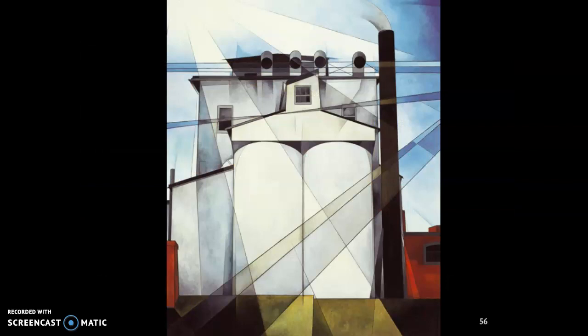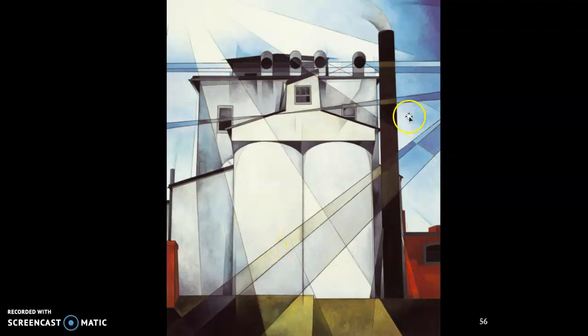Another artist of this period is Charles Demuth, and this work is called My Egypt. It depicts a grain silo rendered with beautiful light falling on it. 'My Egypt' — these are his pyramids, the great creations of America and its emerging industry.